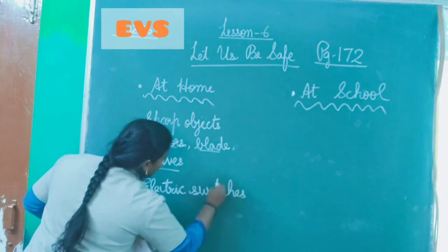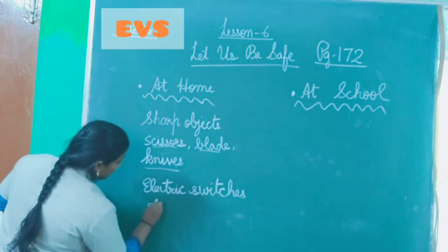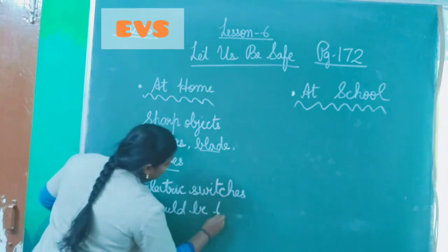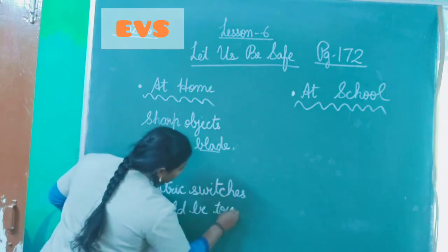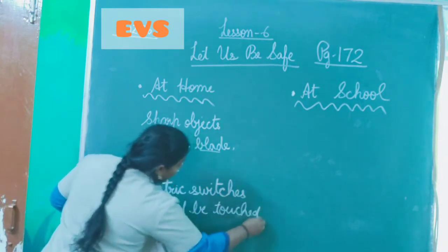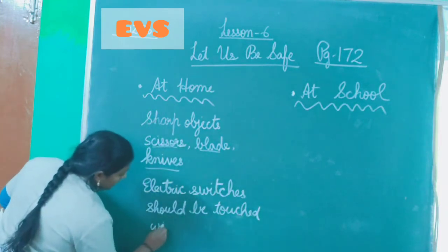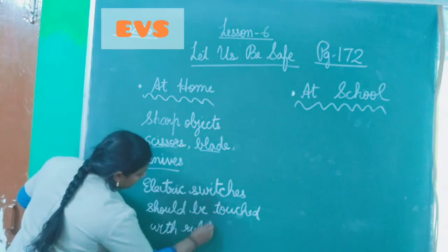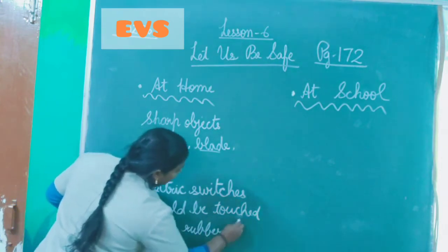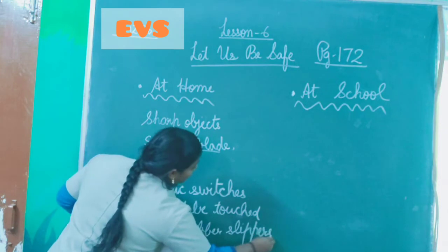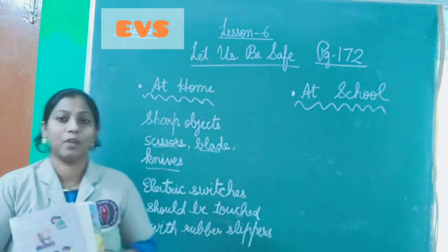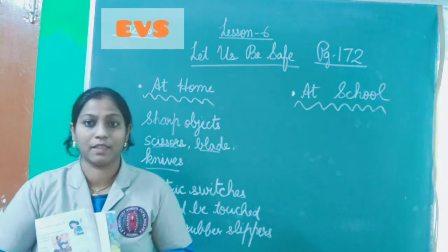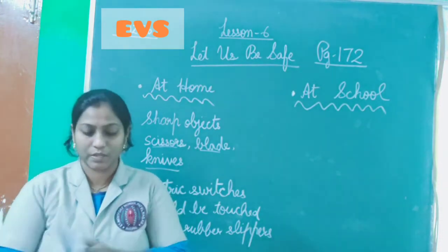Electric switches should only be touched while wearing rubber slippers or shoes, and never with wet hands. Always turn switches on or off while wearing footwear. Do not use electric switches with wet hands.